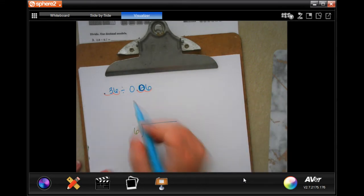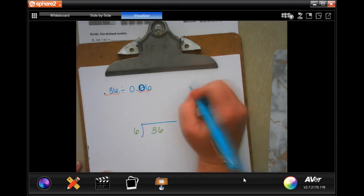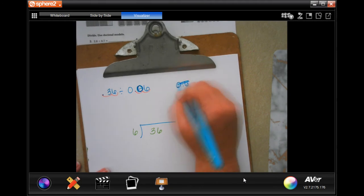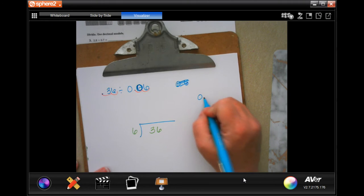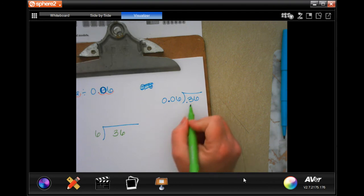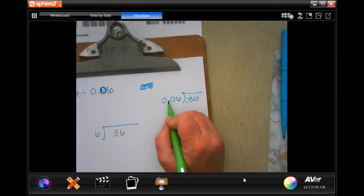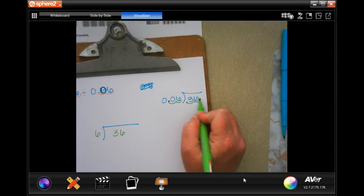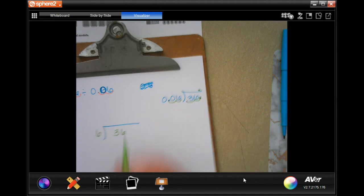You cannot have a decimal outside of the box. So if I write this correctly, I have a decimal right here outside the box and a decimal inside the box. I cannot have a decimal outside the box. It doesn't matter if there's a decimal inside; I just can't have one outside. So I need to move that decimal one, two times, which means I need to move the one inside the box one, two times. Now my decimal is here and I can move it up.